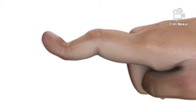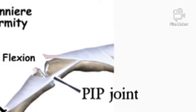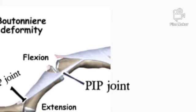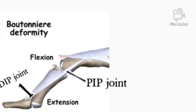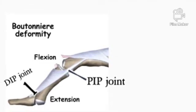Boutonniere deformity: this is another form of hand deformity seen in RA patients. It occurs when the DIP joint of a finger extends and the PIP joint of the same finger flexes. The deformity is a reverse of swan neck deformity and is usually due to rupture of the extensor tendon of the PIP joint of the affected finger.